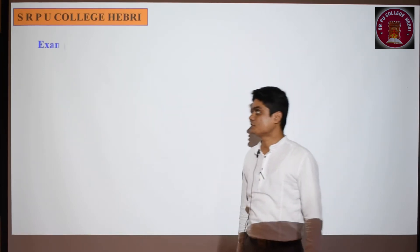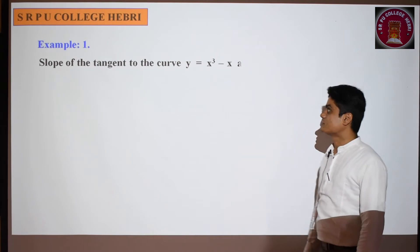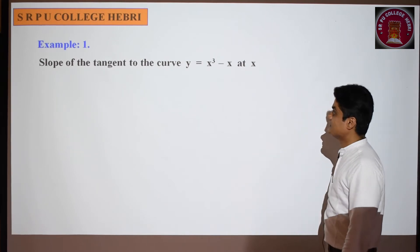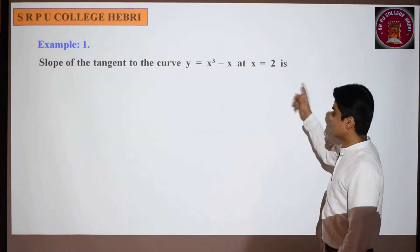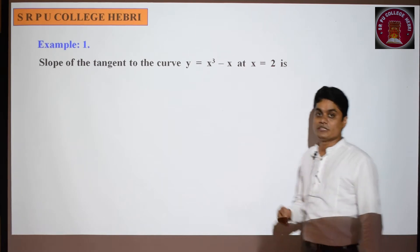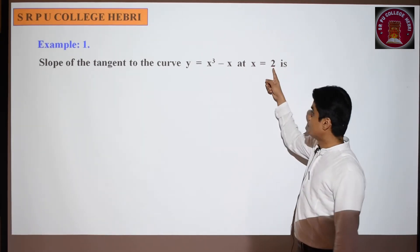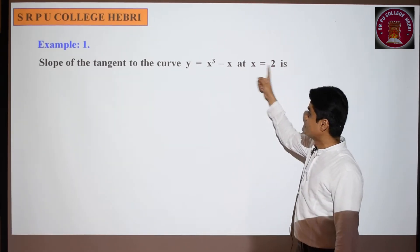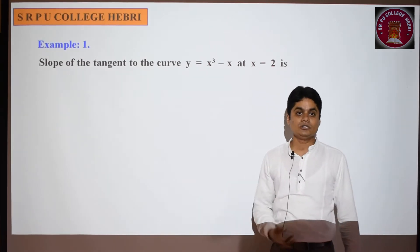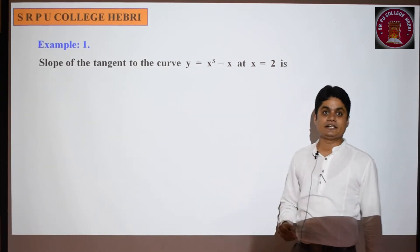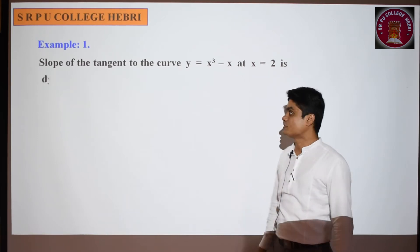The first problem: find the slope of the tangent to the curve y = x³ - x at x = 2. We have to find out the slope of the tangent to the given curve at the given point. The point is given and the curve is also given. We know the slope of the tangent to any curve is dy/dx at the given point.